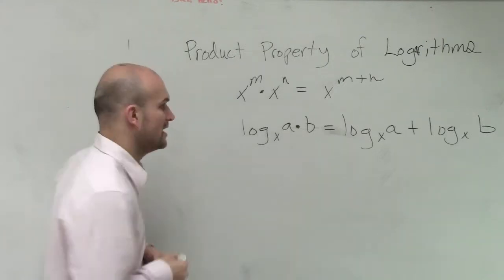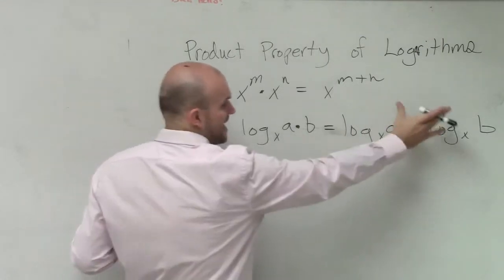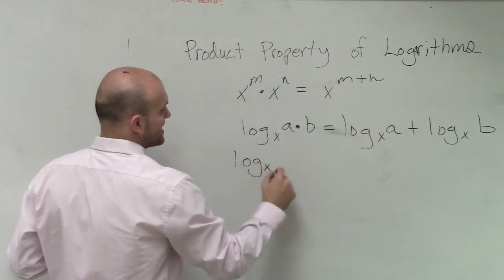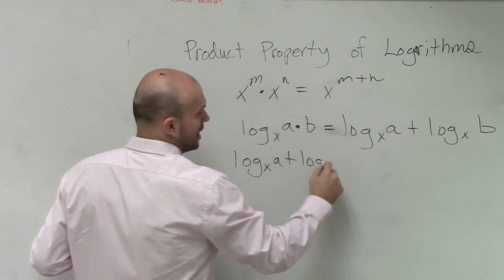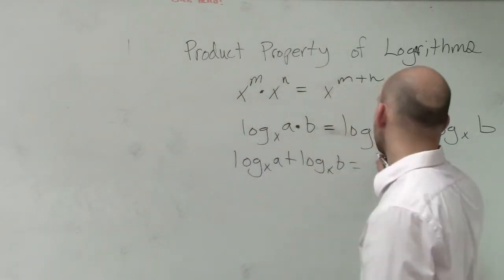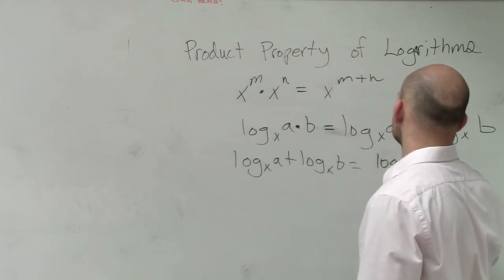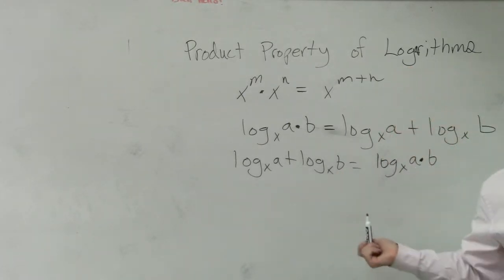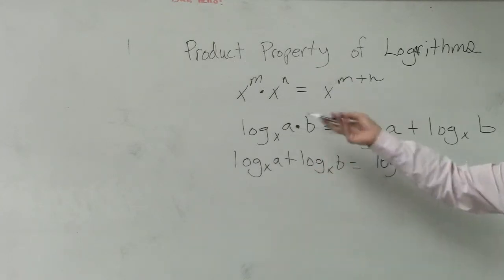And this works the exact same way. This is what we call expanding. But if you're given a problem that looked like this, log base x of a plus log base x of b, you could rewrite that as the log base x of a times b. Working at this form is what we call condensing. So it works both ways.